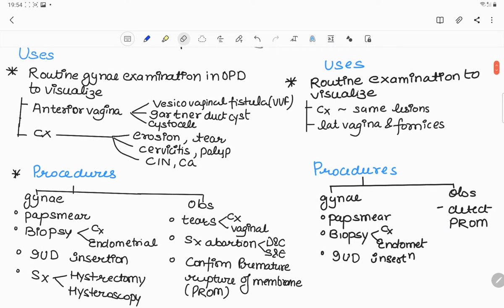SIMS is used for routine gynecological examination in OPD to visualize the anterior vagina, for example to examine vesicovaginal fistula, Gartner duct cyst, and cystocele examination. It is also used to visualize cervix, examples are cervical erosions, cervical tears, cervicitis, cervical polyp, or any carcinomatous changes.